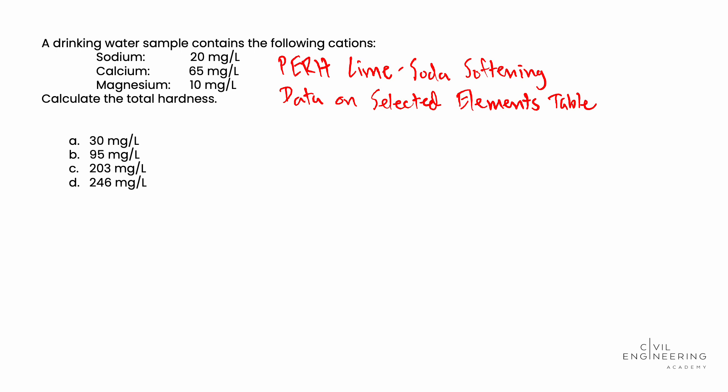Finally, perhaps the most crucial part of the problem, you need to know that hardness, whenever we see hardness associated with a water sample, is associated specifically with calcium ions (Ca2+) and magnesium ions (Mg2+). The sodium ion does not matter in the total hardness equation, so you can ignore that.